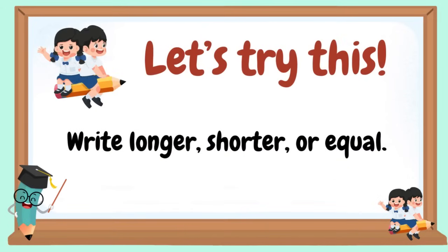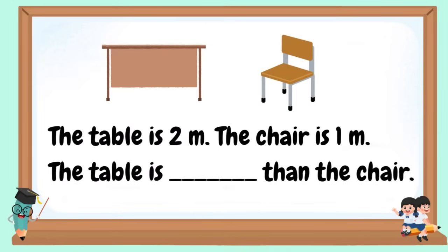Let's try this. Write longer, shorter, or equal. The table is 2 meters. The chair is 1 meter. The table is ___ than the chair.